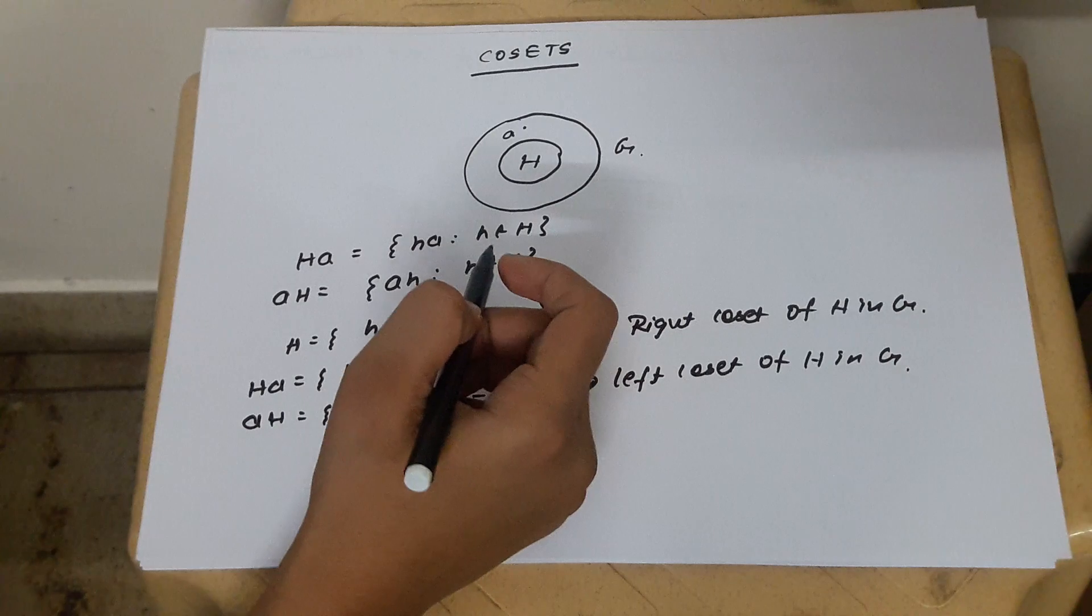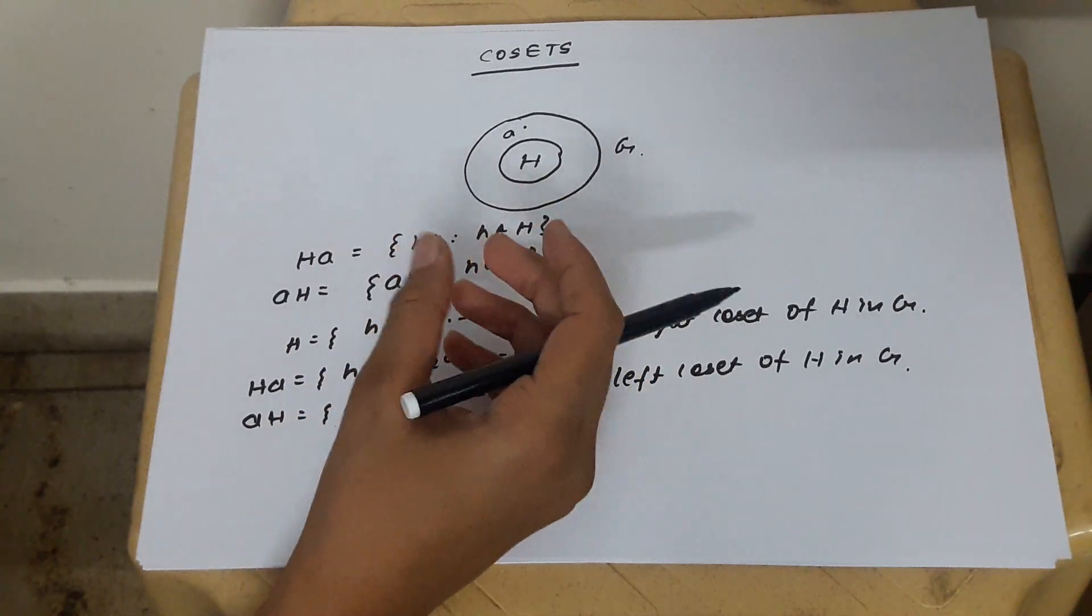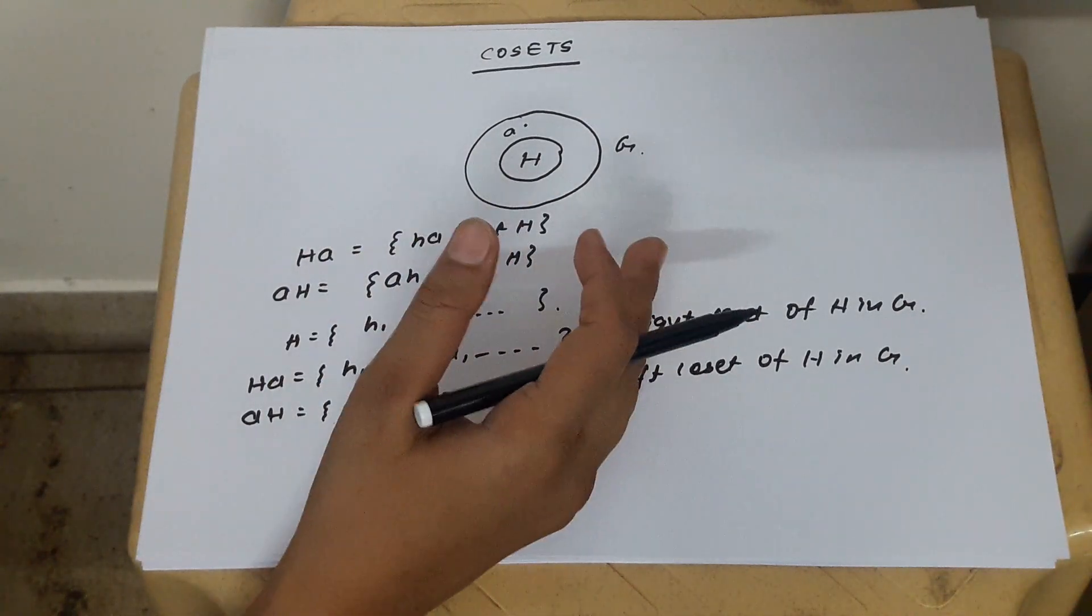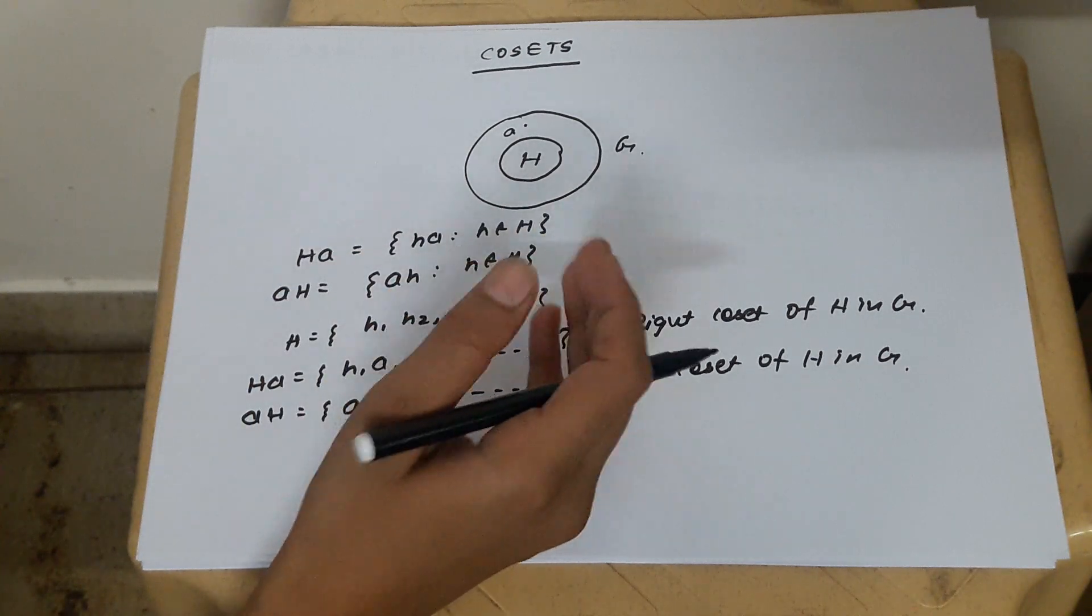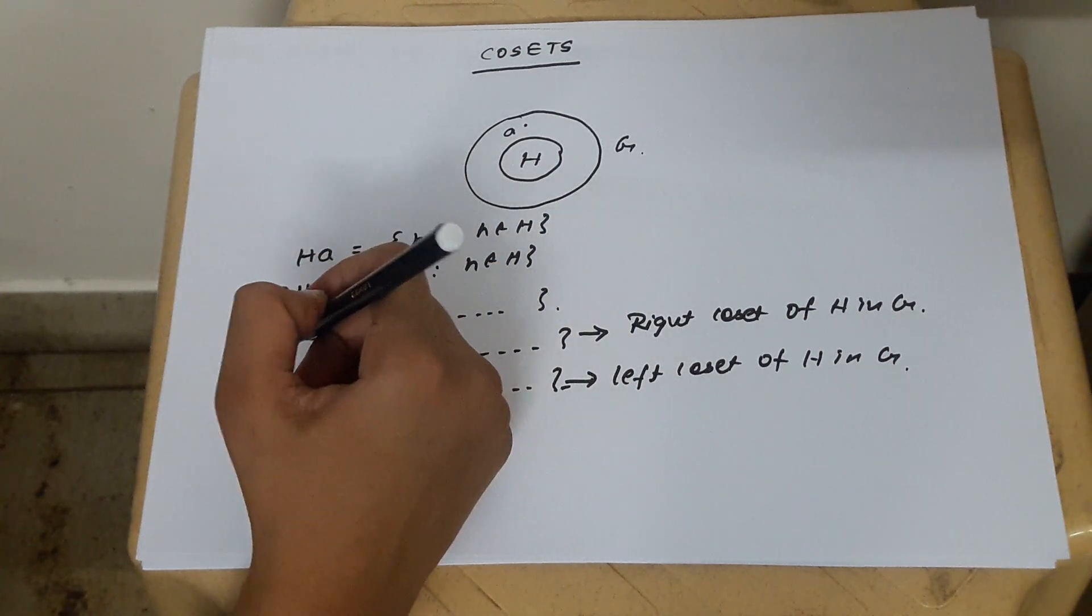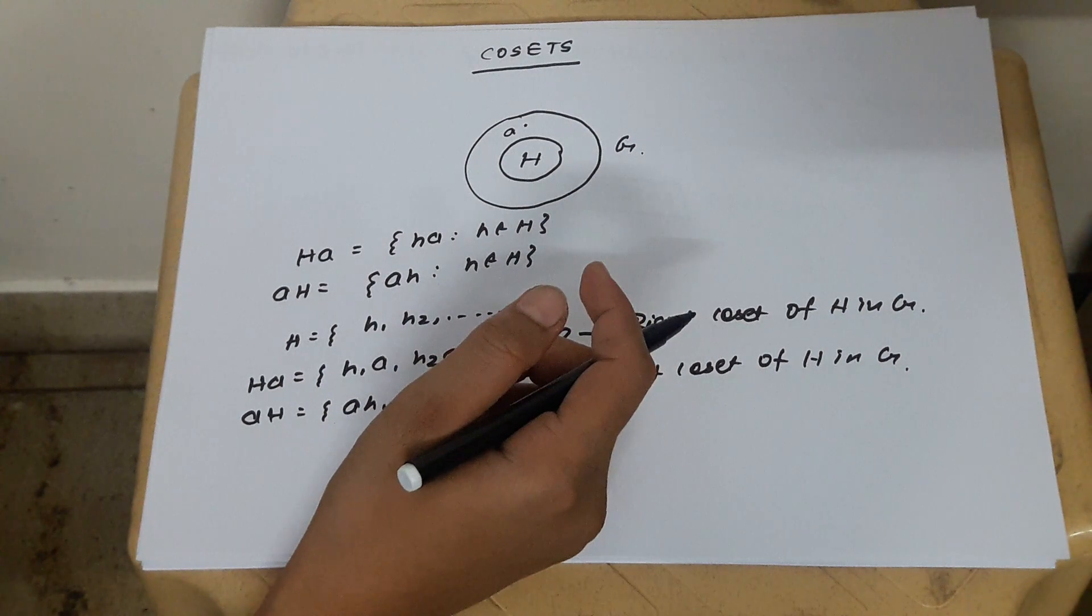Most of the time we discuss, whenever we are doing any kind of proof, result or property, by default, we are using it without loss of generality. It is a multiplicative group only.